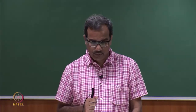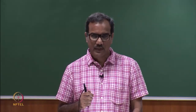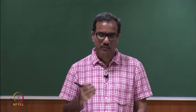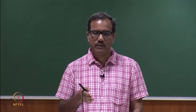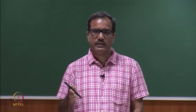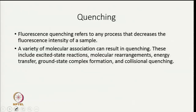Now we will discuss another phenomenon called quenching, which is particularly important when a different molecule is in the vicinity of a fluorophore. Quenching is any process that decreases the fluorescence intensity of a sample. A variety of molecular associations can result in quenching, which is why quenching can be used to study molecular associations. Processes include excited state reactions, molecular rearrangements, energy transfer, ground state complex formation, and collisional quenching.